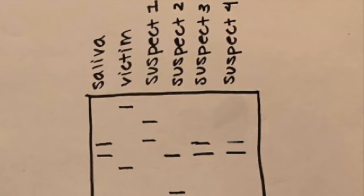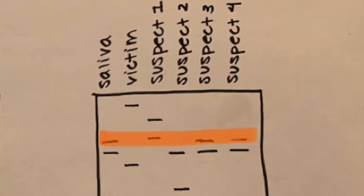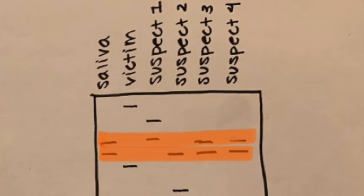Now we must look at locus 2 to figure out whether Suspect 1 or Suspect 3 is the culprit. By comparing the top band of saliva, we see that Suspect 1, 3, and 4 all have the same band. By looking at the second saliva band, we will find out more information.